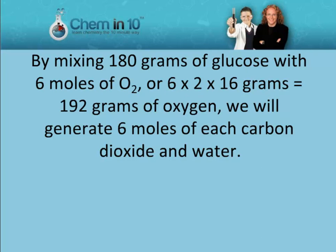By mixing 180 grams of glucose with 6 moles of oxygen — or 6 times 2, because there are 2 atoms per every mole of oxygen molecule, times 16 grams, the mass of an oxygen atom, equals 192 grams of oxygen — we will generate 6 moles of each carbon dioxide and water.